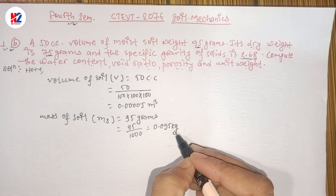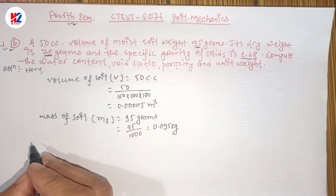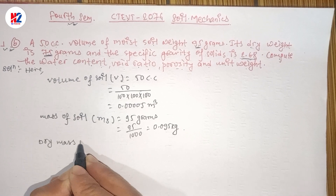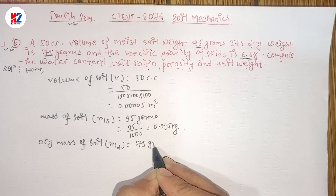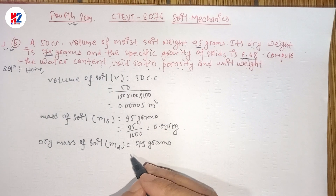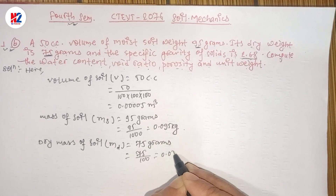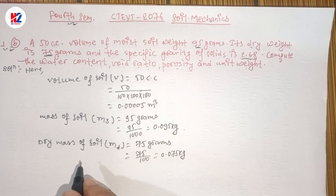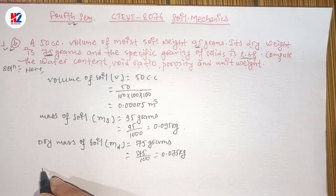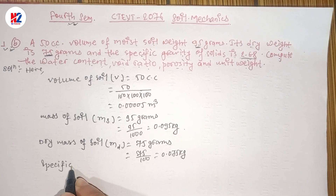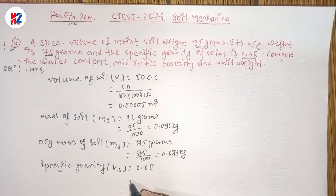The dry mass of soil: the dry mass of soil is 75 grams. Dividing by 1000, the dry mass of soil is 0.075 kg. The specific gravity of solids is given as 2.68. These are all the given values we need.